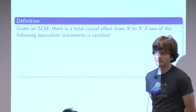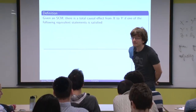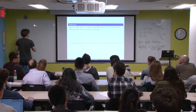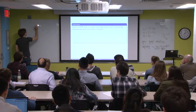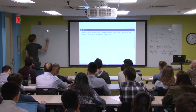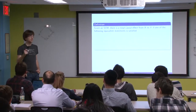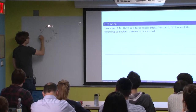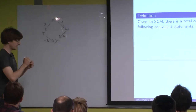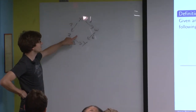A student suggests: we can draw a directed path between the two variables. Very good. So when there is a directed path between x and y - now I want to challenge you. Let's say we have a situation in a linear model with these path coefficients. You might wonder whether this is the best definition, because if you look at this situation, if you intervene on x and set it to a very large value...